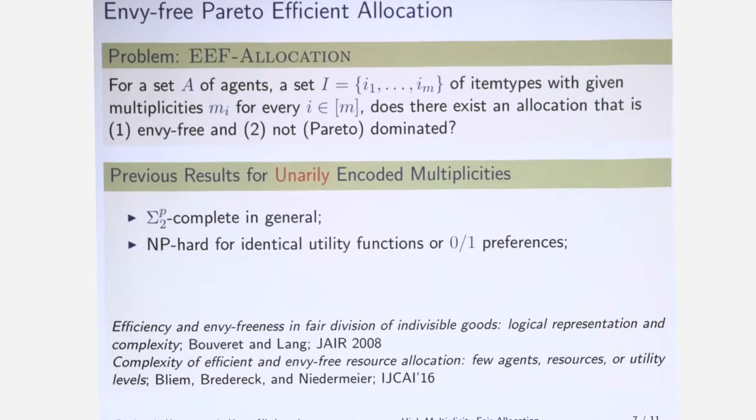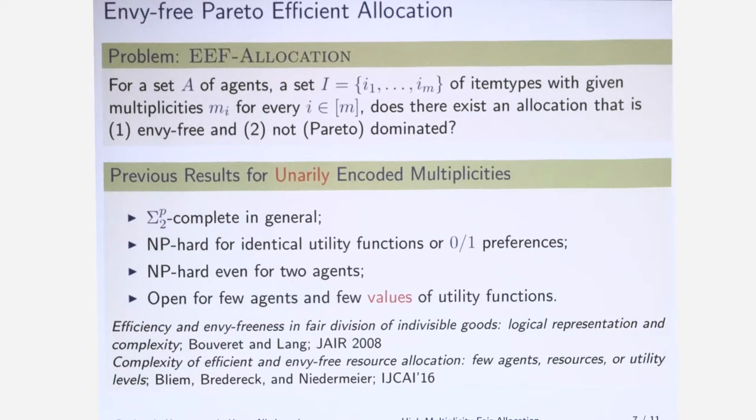Even if the utilities are identical for all agents, or even if you have preferences only zero-one, it doesn't help so much, it's still NP-hard. The same holds if you only constrain your instances to two agents. In the second paper, the question was raised: what happens if we have few agents and few values in this parameterized complexity sense? What happens if our features are the number of agents and the number of different values of utility functions?